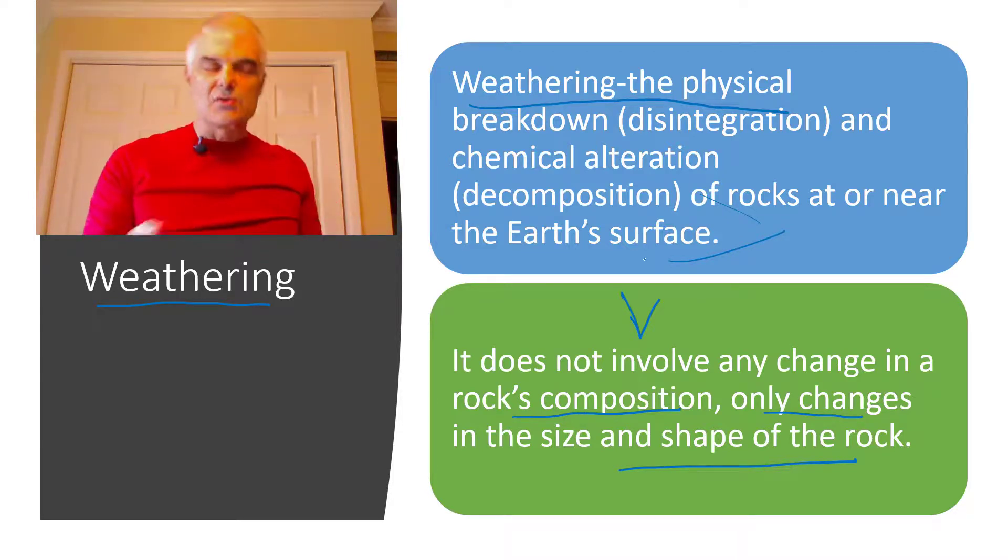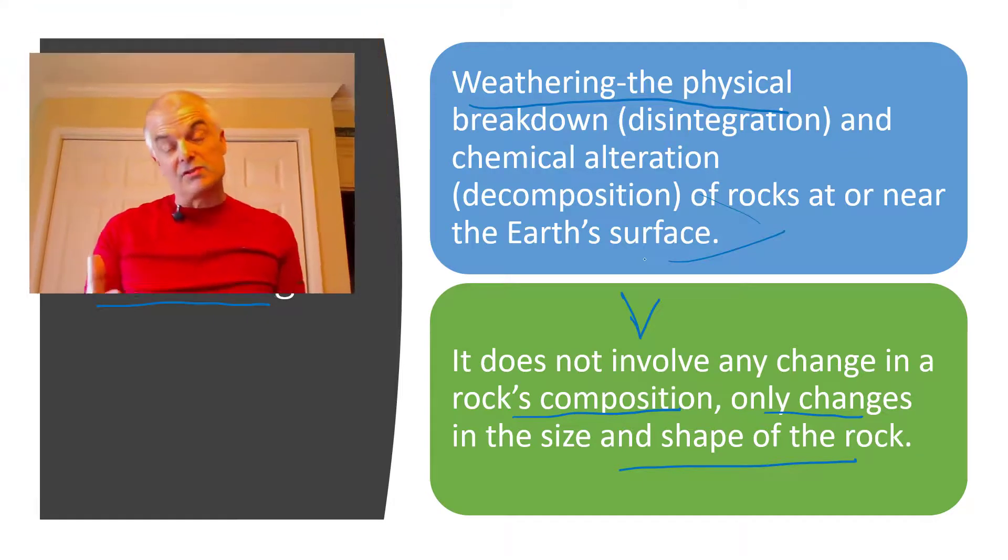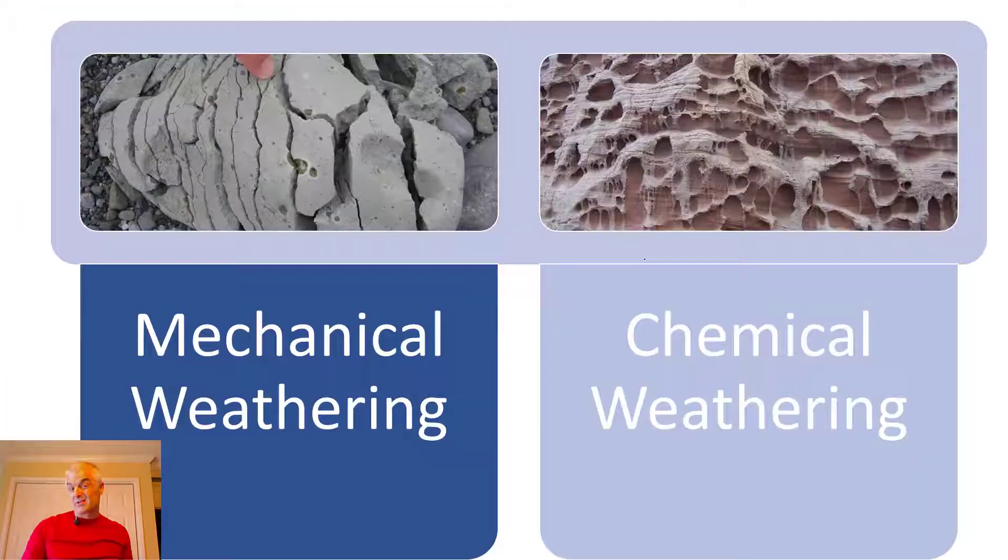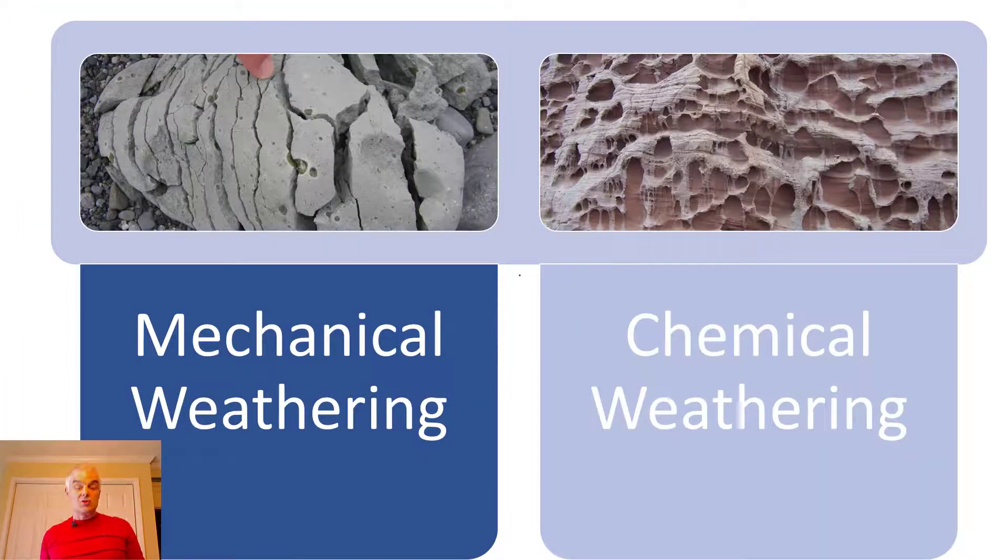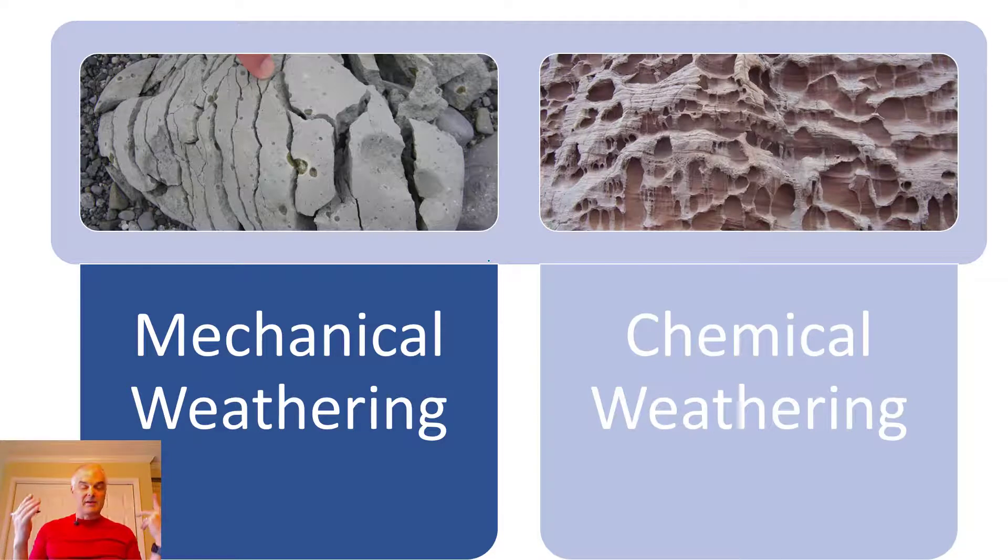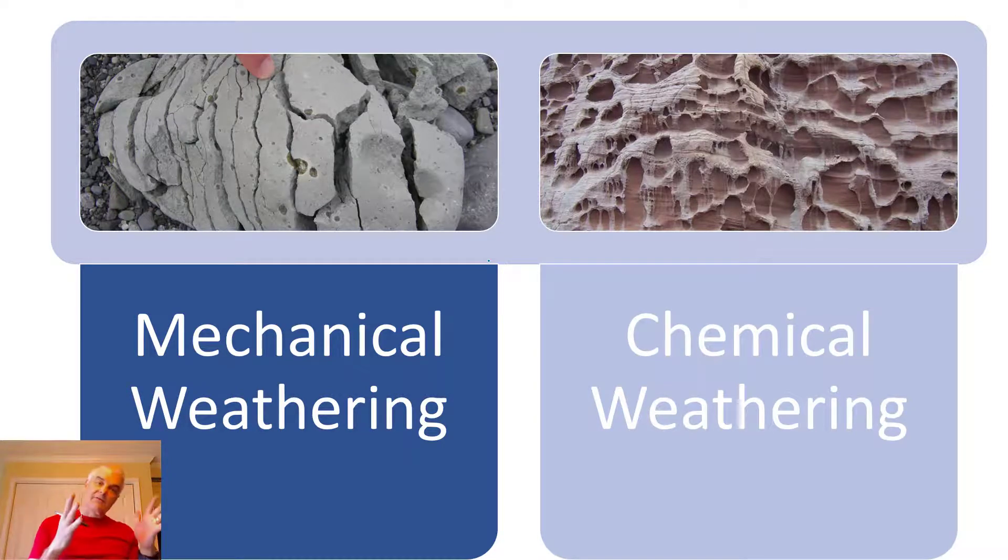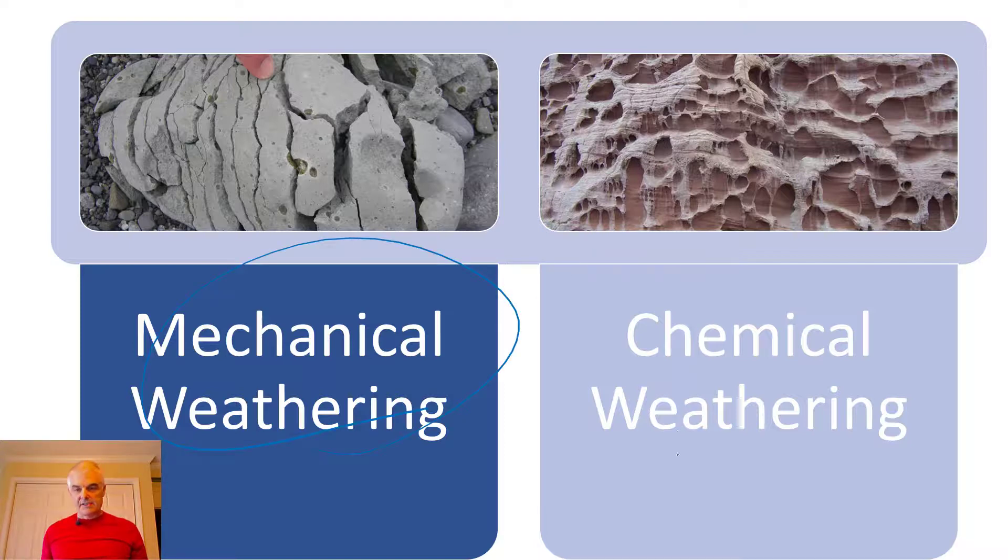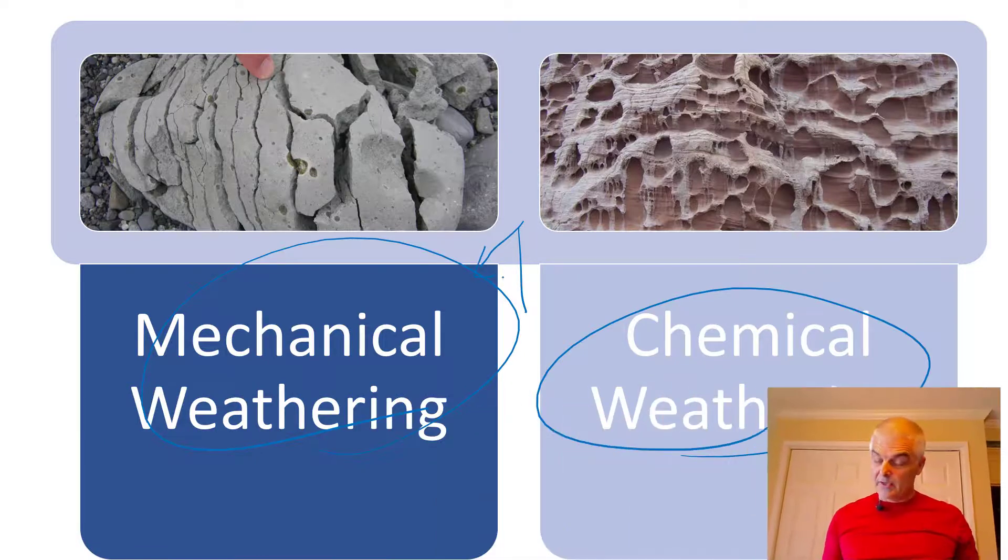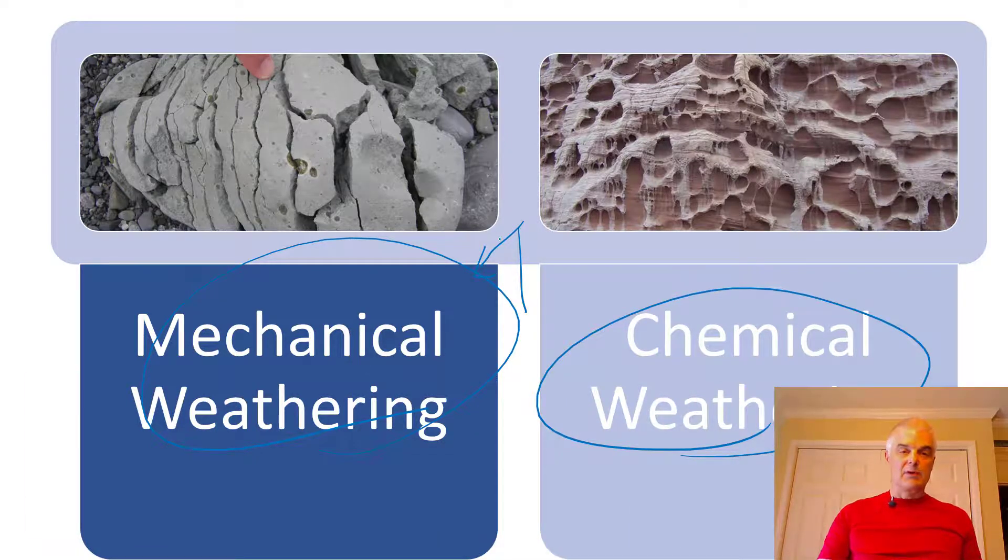We're going to have two types in this weathering. You're going to see there's actually two kinds - one that changes what it is and one that doesn't change what it is, it just makes it smaller. So it's important to understand we've got two kinds of weathering: mechanical and chemical. Now this video is going to focus on mechanical weathering. In the next video we'll talk about chemical weathering.